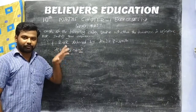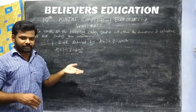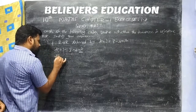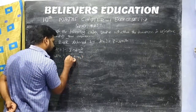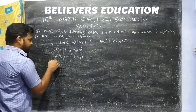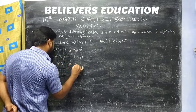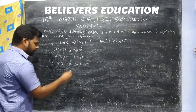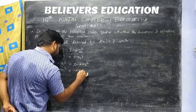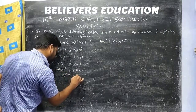Let us prove one-to-one for the next function. We set f(x1) equal to f(x2): 3 minus 4x1 squared equals 3 minus 4x2 squared. Both sides, 3 minus 3 cancel, and 4 cancels, giving x1 squared equal to x2 squared.